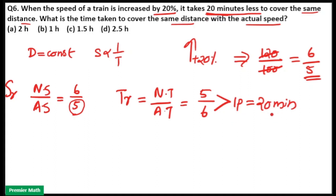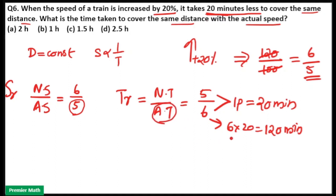The ratio difference will become the actual difference. Since 1 part is equal to 20 minutes, then 6 parts is equal to 6 × 20 = 120 minutes. We need to find the actual time. Actual time is equal to 6 parts, so 6 parts = 120 minutes. New time is equal to 5 × 20 = 100 minutes.